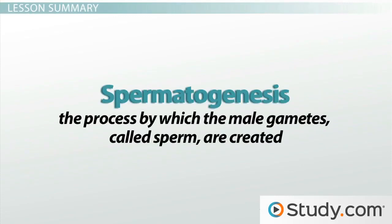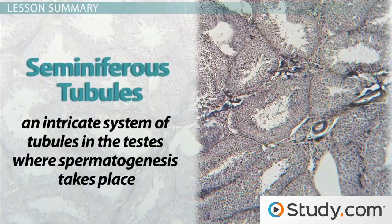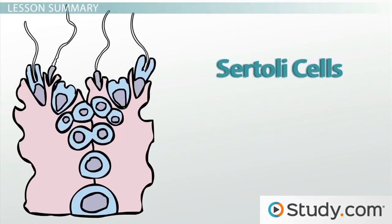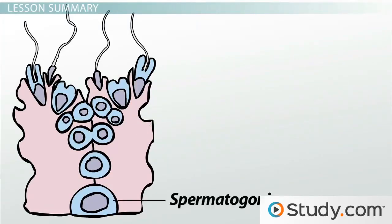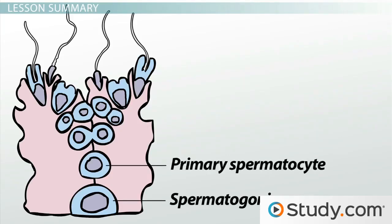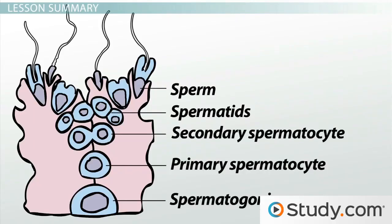Let's review. Spermatogenesis is the process by which the male gametes, called sperm, are created. Spermatogenesis takes place in the seminiferous tubules, which are an intricate system of tubules in the testes. The tubules are lined with an epithelial layer of Sertoli cells, which support and provide nutrients to the various sperm precursors. The rapidly dividing spermatogonia are located at the base of the Sertoli cells. The spermatogonium becomes a primary spermatocyte, migrates away, then divides to form two secondary spermatocytes, which continue migrating and divide to form four haploid spermatids. After meiosis is complete, they differentiate into fully functional sperm.